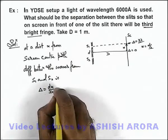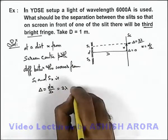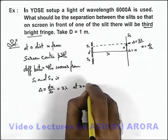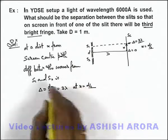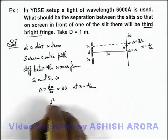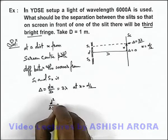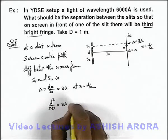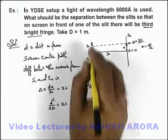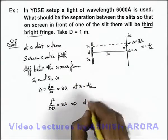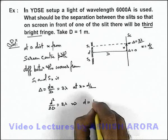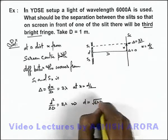And here this path difference should be equal to 3 lambda at x equals d by 2. If we substitute it here it will be d squared by 2D equals 3 lambda. That implies the value of slit separation which we are required to find, that is equal to root of 6 lambda D.